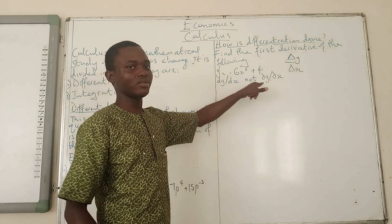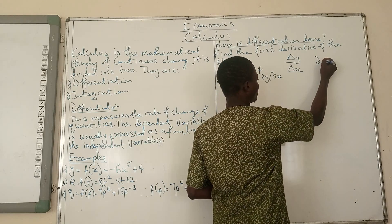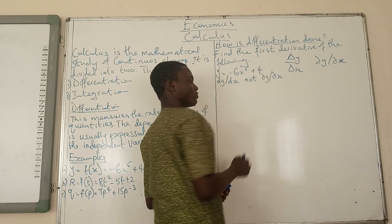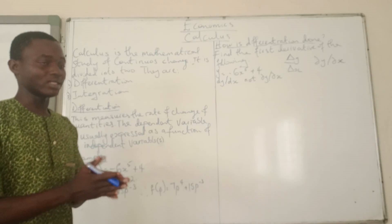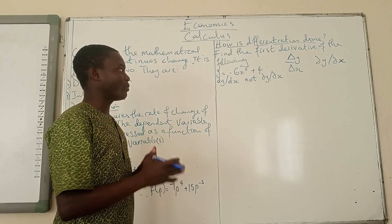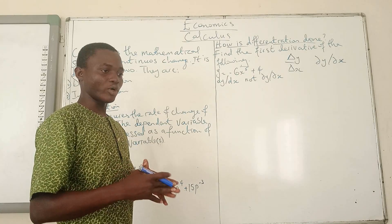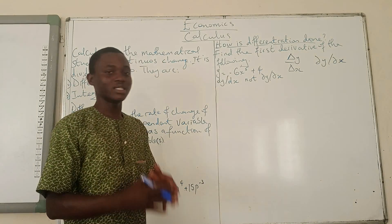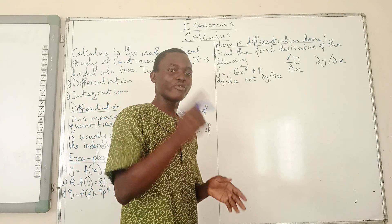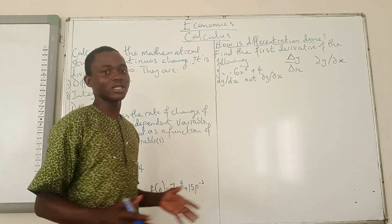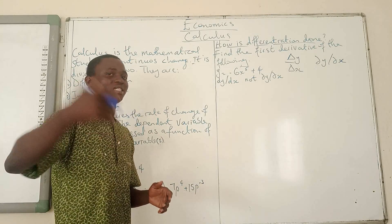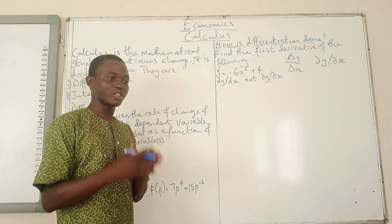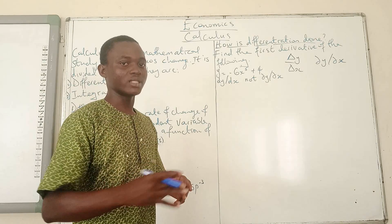You might mistakenly write a slanted D — that is this kind of D — change in y as a result of change in x. That would be wrong in this case, because whenever you have a slanted D sign, you are talking about partial differentiation. Partial differentiation tells you that the dependent variable is a function of multiple independent variables, and you are looking for the change that occurs in the dependent variable from one of the independent variables.